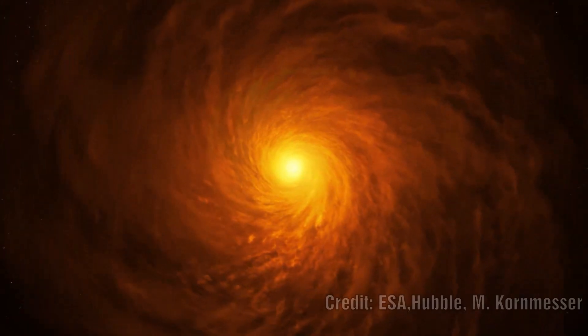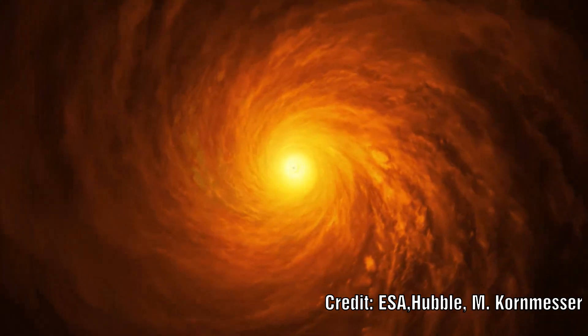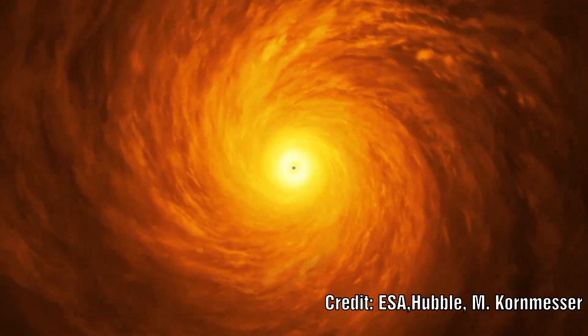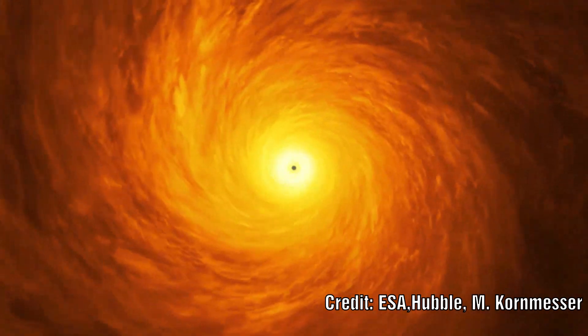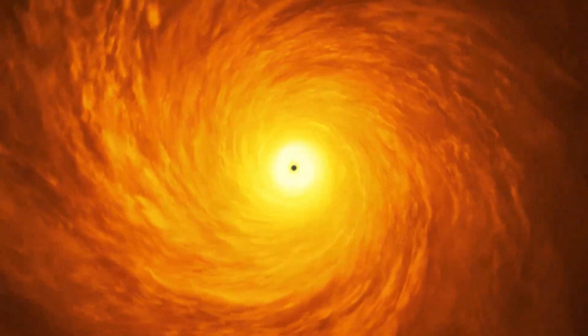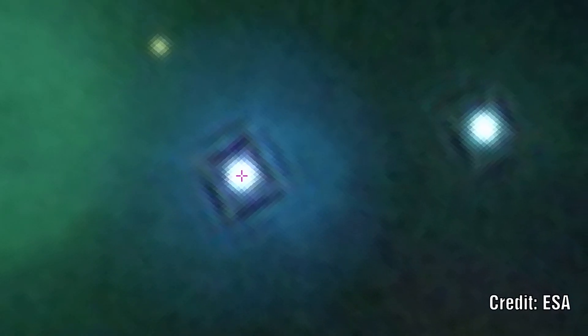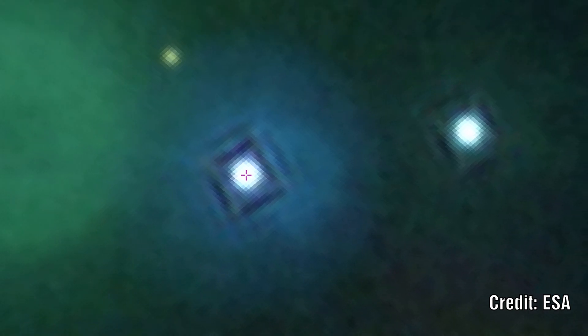Continued observations also showed that this quasar resided inside a host galaxy which itself was part of a poor cluster of galaxies. The galaxy itself is about three magnitudes fainter than the quasar in visible light, and this indicates that this galaxy is brighter than the most luminous galaxy of a rich cluster.